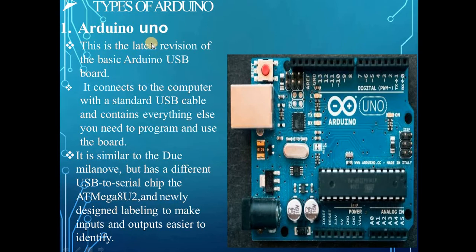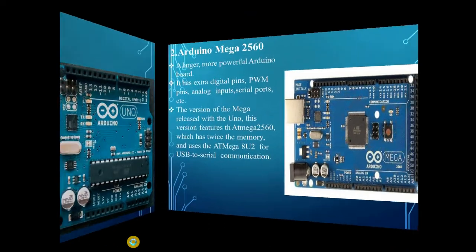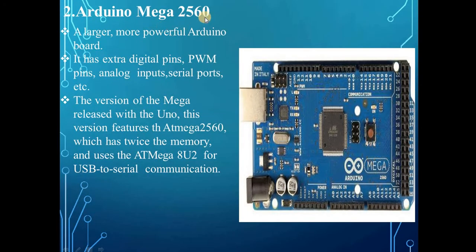The first type of Arduino is the Arduino UNO. This is the latest revision of the basic Arduino USB board. It connects to the computer with a standard USB cable and contains everything you need to program and use the board. It is similar to the Duemilanove but has a different USB-to-serial chip and newly designed labeling to make inputs and outputs easier to identify.